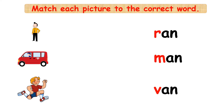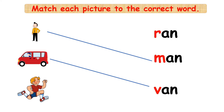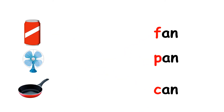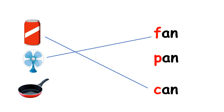Match each picture to the correct word. Man. Van. Ran — R, A, N. Can — K, A, N. Fan — F, A, N. Pan — P, A, N.